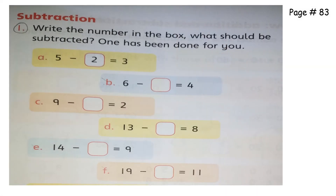Come to page number 83: write the number in the box — what should be subtracted? The first one is already done. I will do b, c, d, e, and f part. In b part, what number should we subtract from six to make it four? The easiest method: draw six lines and cut four lines — what is left? Two. It means two must be subtracted from six to make it four.